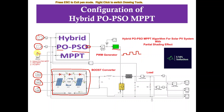For mode selection, we provide a constant block here. When you type 0, it operates in hybrid PO-PSO and PSO-MPPT mode. When you type 1, it operates in PSO-MPPT mode. When you type 2, it operates in PO-MPPT algorithm mode.